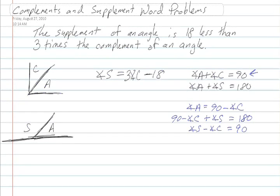Now what we can do is take this and we will substitute this expression into our new equation. So we get three times the measure of angle C minus 18 minus angle C equals 90 degrees.